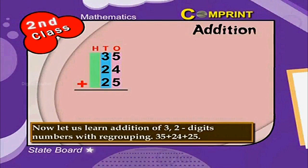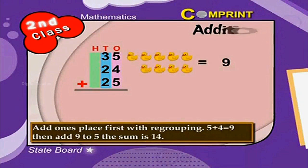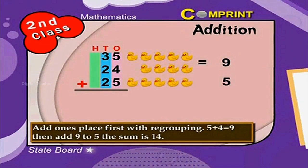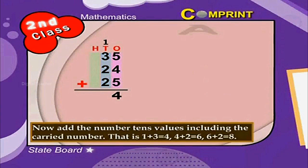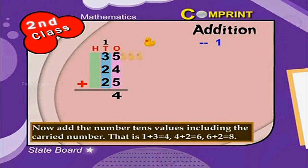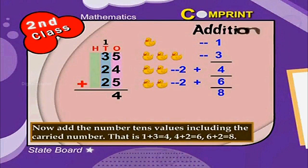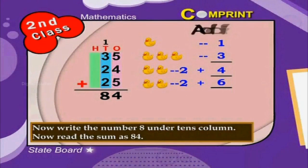Now let us learn addition of 3 two-digit numbers with regrouping. Have a look at the picture: 35 plus 24 plus 25. Add ones place first with regrouping: 5 plus 4 is equal to 9, then add 9 to 5 — the sum is 14. Write 4 under ones column and carry 1 to the tens value. Now add the tens values including the carried number: 1 plus 3 is 4, then 4 plus 2 is 6, then 6 plus 2 is 8. Write 8 under tens column. Read the sum as 84.